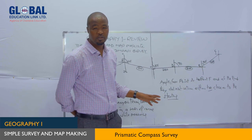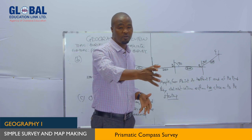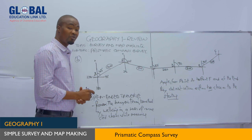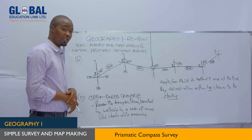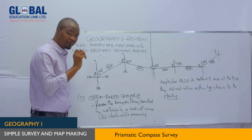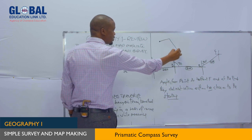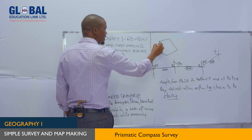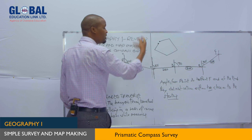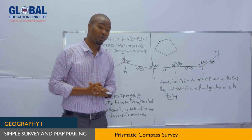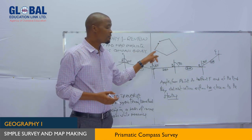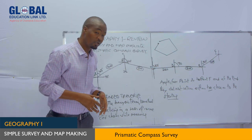In a closed-ended traverse, the surveyor's team starts at one point, travels to different points, and at the end returns too close to or back to the starting point — for instance when measuring the area of a school ground or playground.